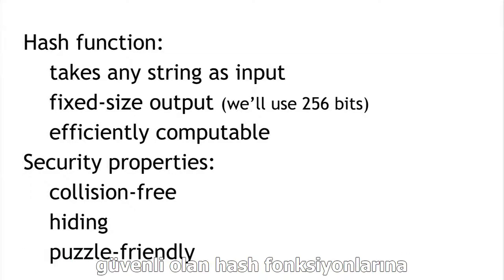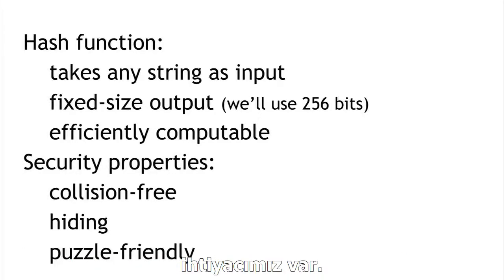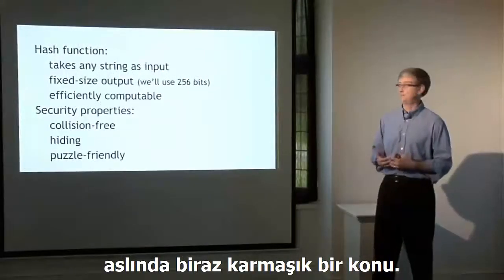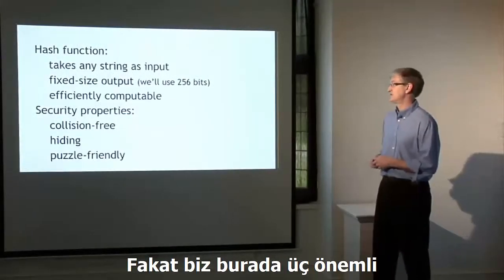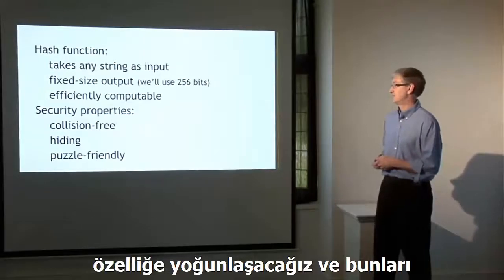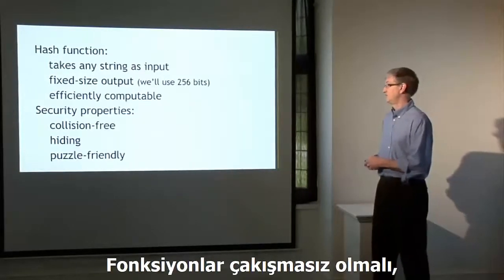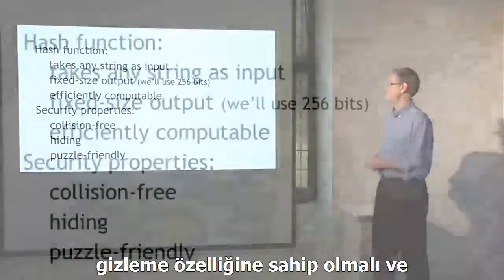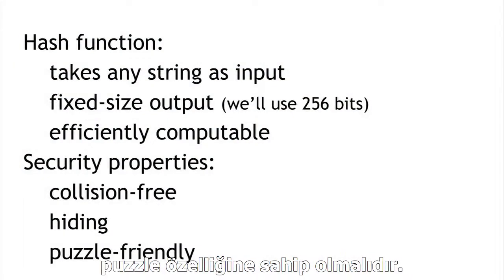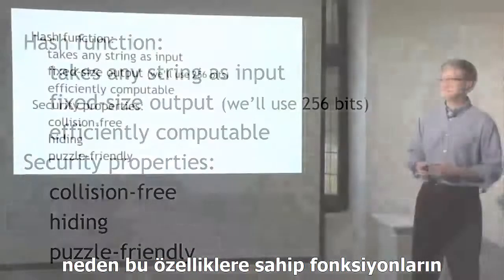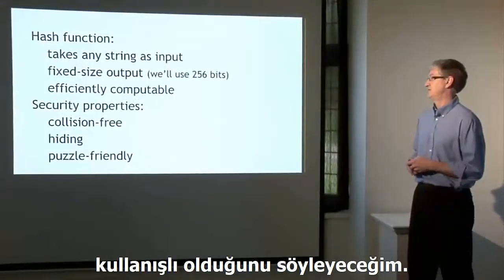We're going to need hash functions that are cryptographically secure. The cryptographic properties of hash functions are a complicated topic in general, but we're going to focus on three particular properties. In particular, that the function is collision-free, that it has a hiding property, and that it's puzzle-friendly. For each of these, I'll talk about what the property is, what it means, and then I'll talk about why it's useful.